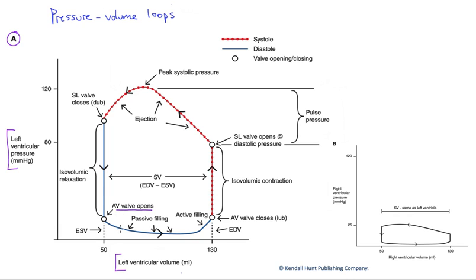Blood is flowing from the veins through the atria, straight through the AV valve and into the ventricles. A significant portion of our ventricular filling is passive.